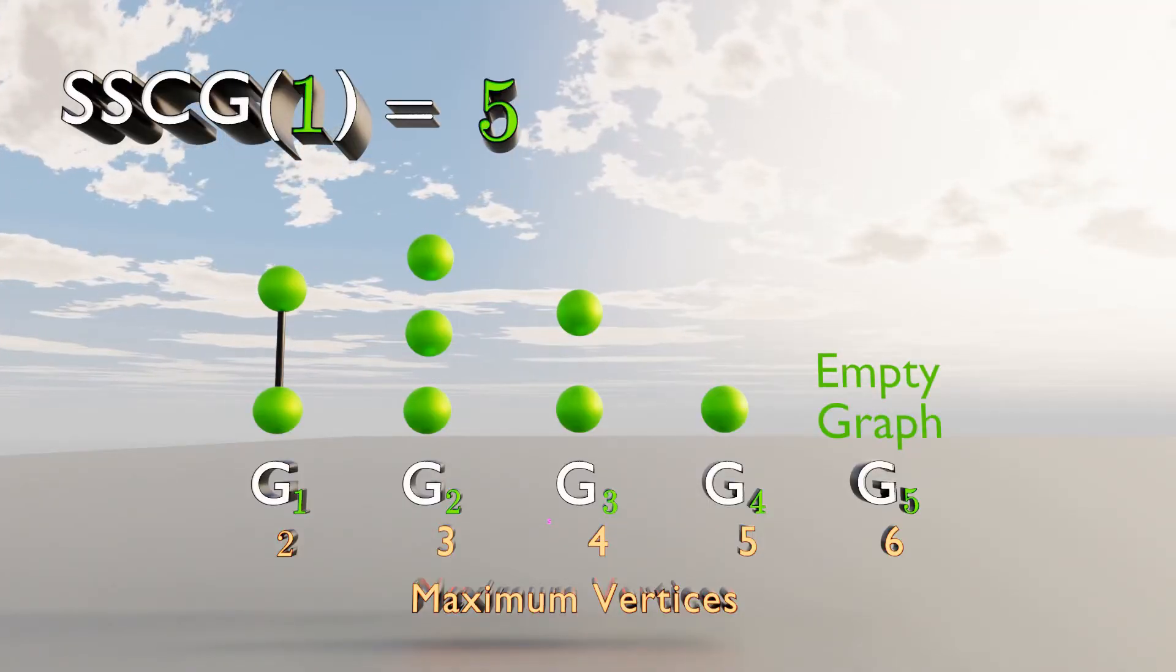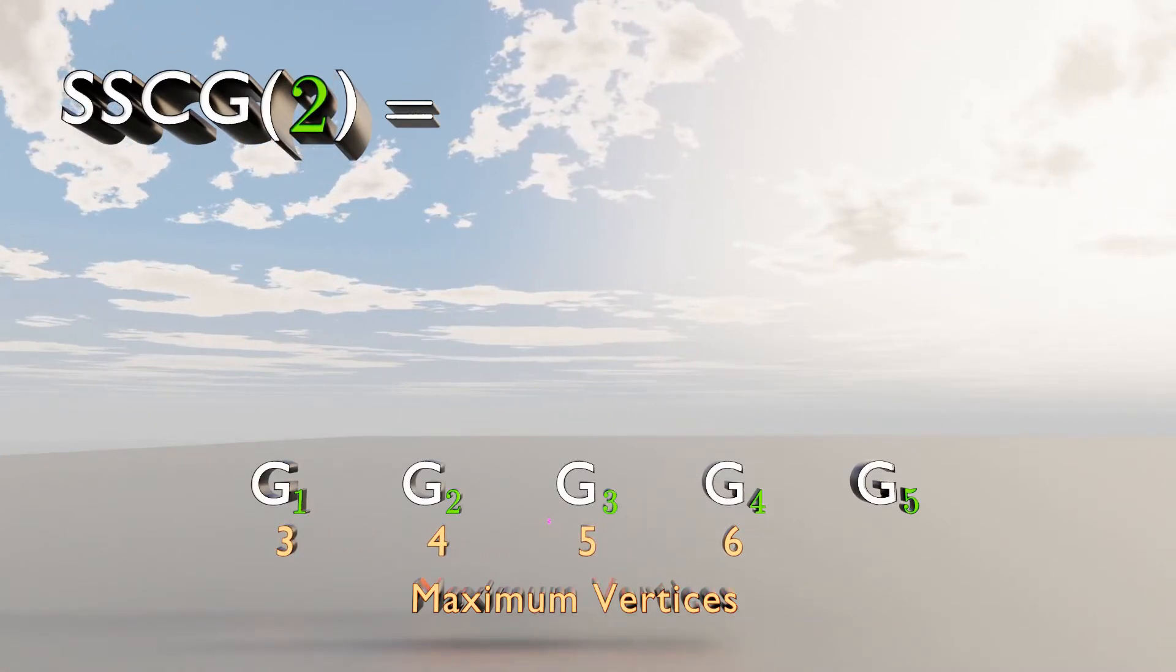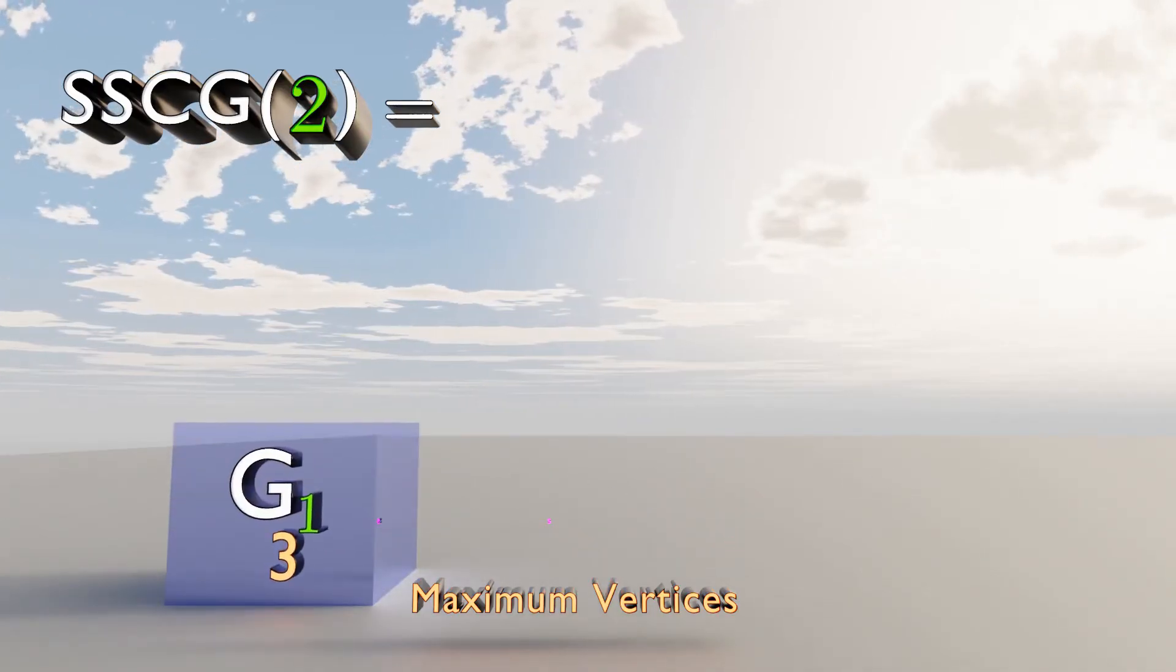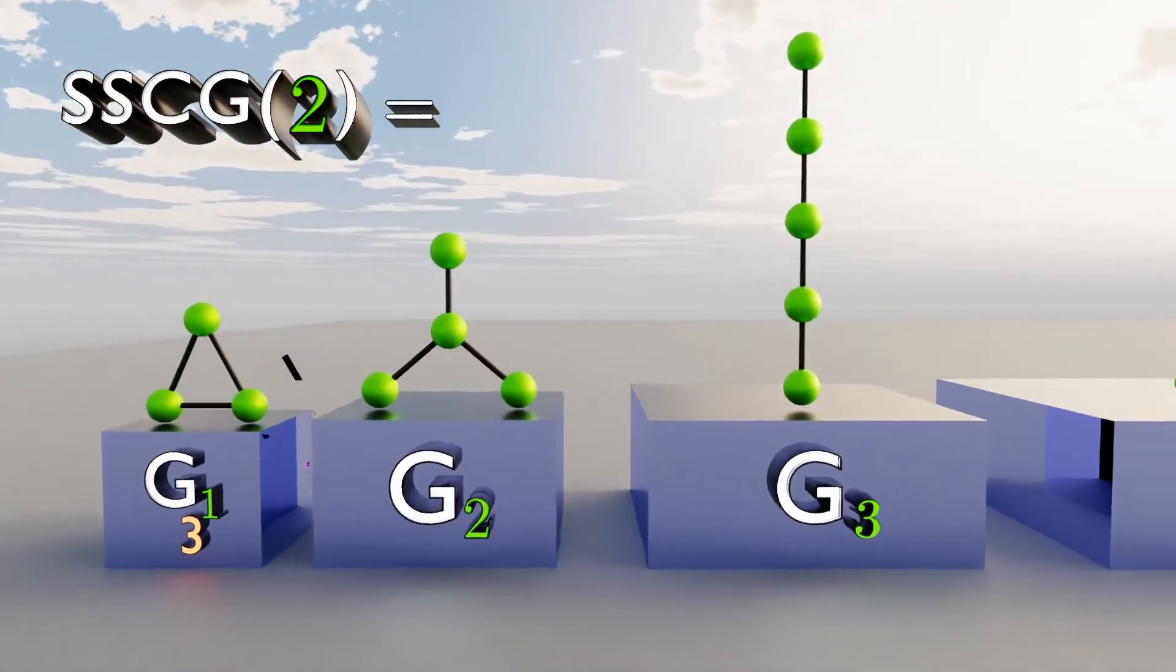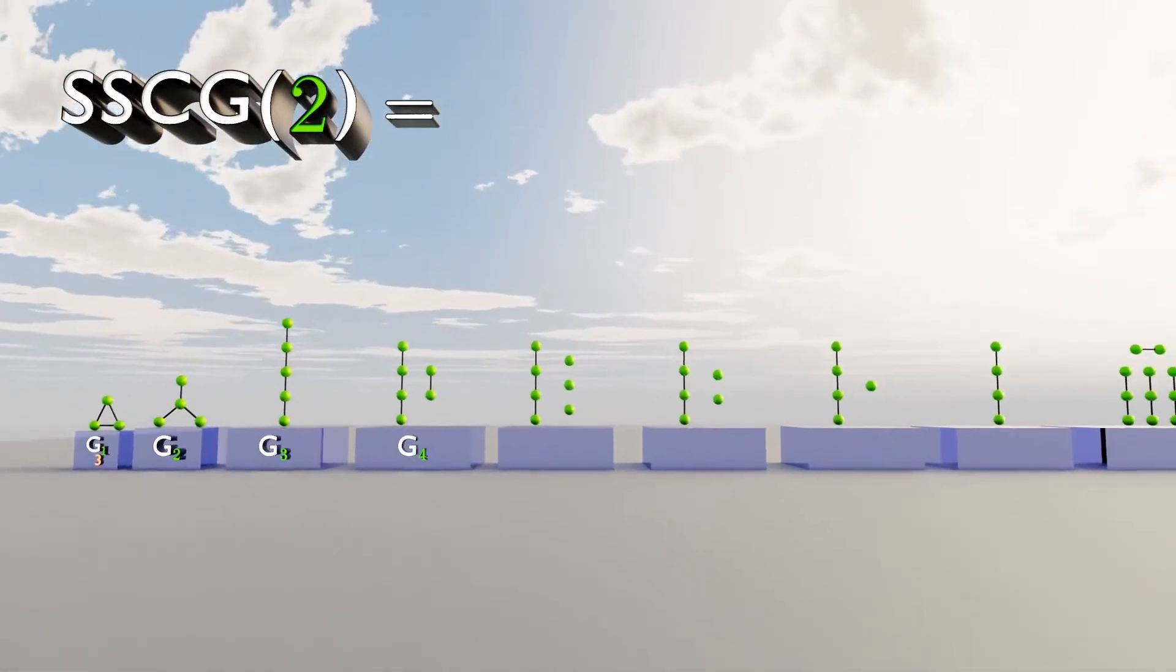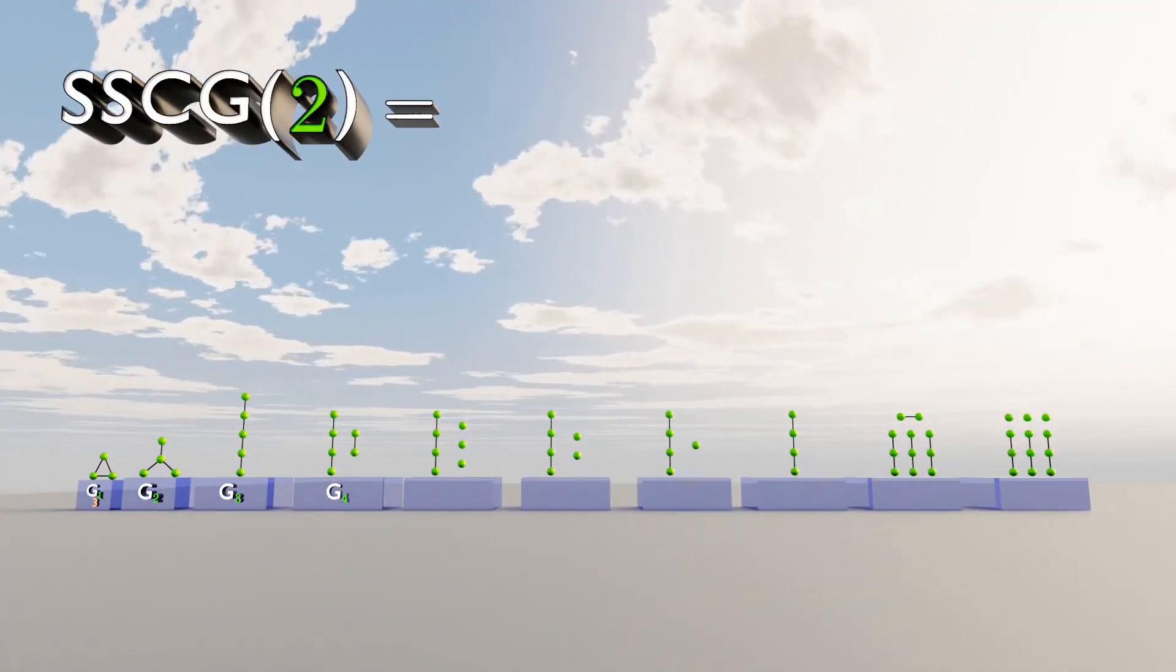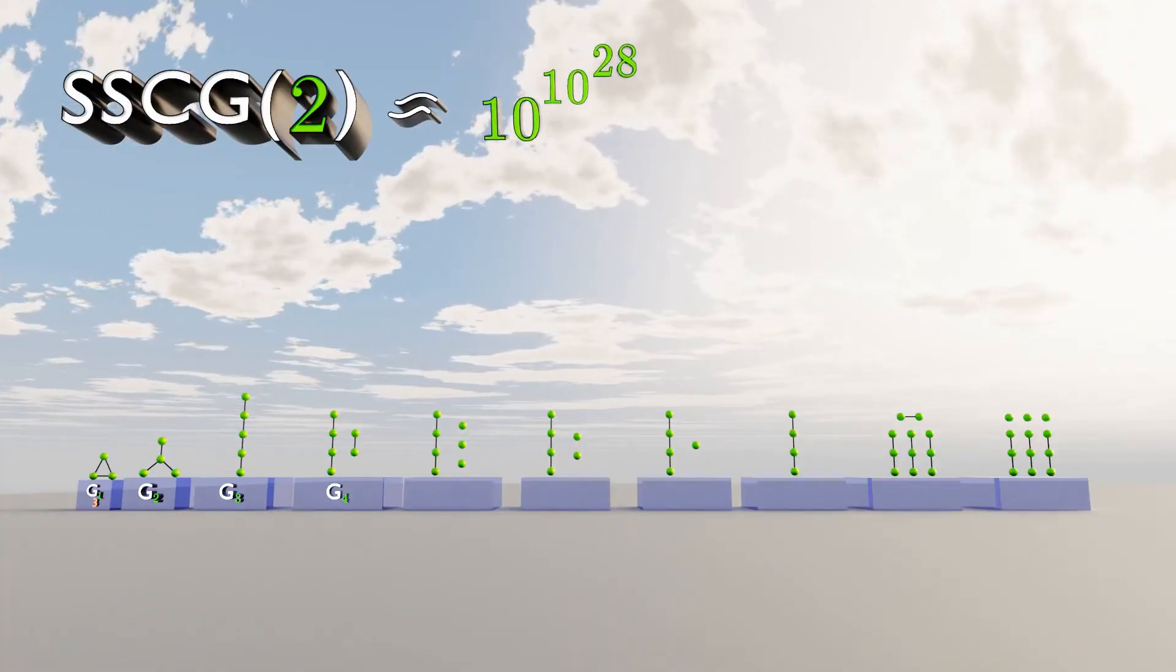Now let's try SSCG2. In SSCG2, the first graph can start with 3 vertices. Now this creates a much longer sequence. The last graph in SSCG2 is more or less this number.